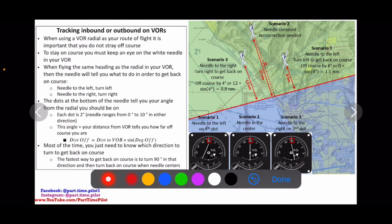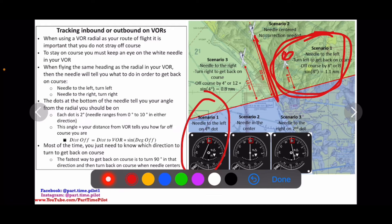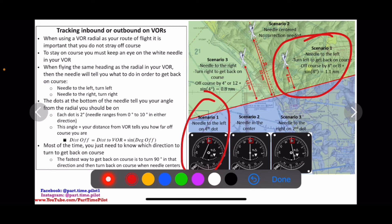We have three different scenarios, each with a VOR reading. In scenario one, the needle is to the left on the fourth dot. Each dot is two degrees, so that means we're eight degrees off. Needle to the left means turn left to get back on course, so that means we're to the right of the radial. We're off course by eight degrees. Our VOR-DME tells us we're eight nautical miles from the VOR station. So we do eight times the sine of eight degrees, and we get 1.1 nautical miles. That means we are 1.1 nautical miles from the radial.